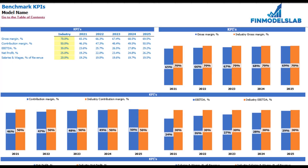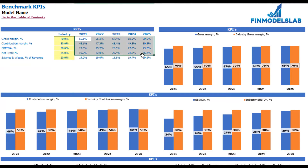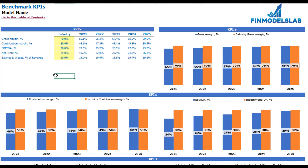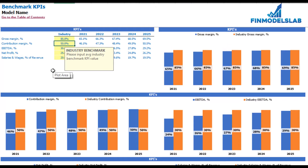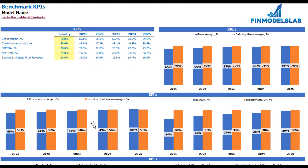On the benchmarks KPI tab you may compare your financial outputs with your industry benchmarks. There are five benchmarks: gross margin, contribution margin, net profit, EBITDA, and salaries and wages as a percentage of revenue. In the model cells you see the values produced by the model, and in the yellow cells you can set up your industry benchmarks — for example, 85% gross margin for your industry. Below you see the same information in graphical form, with orange columns for industry benchmarks and blue columns for the model values.